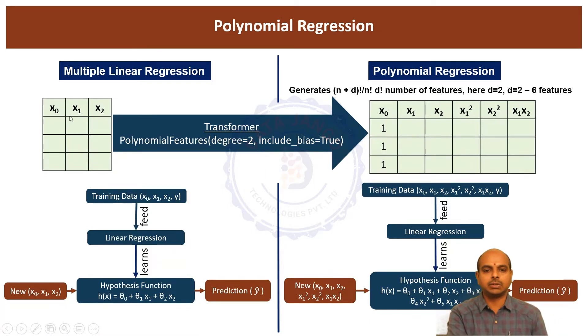We have x0, x1 and x2. x0 is a bias term, just all ones. When you pass it to the polynomial features class, it is going to create x1, x1 square, x2 square, and x1 x2.